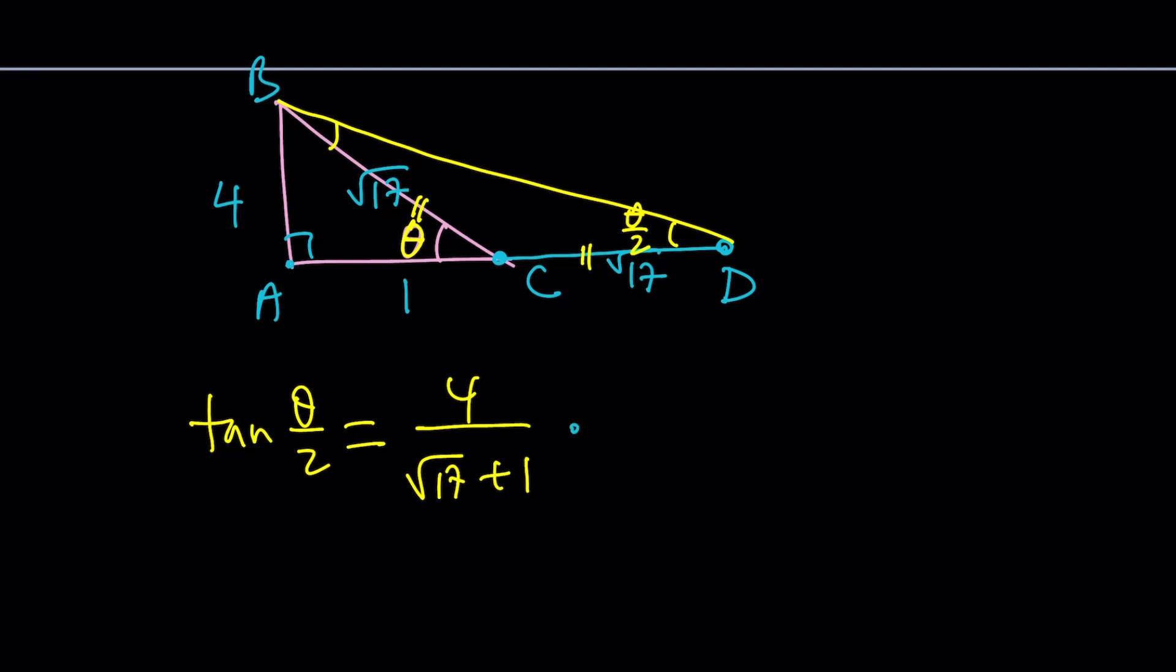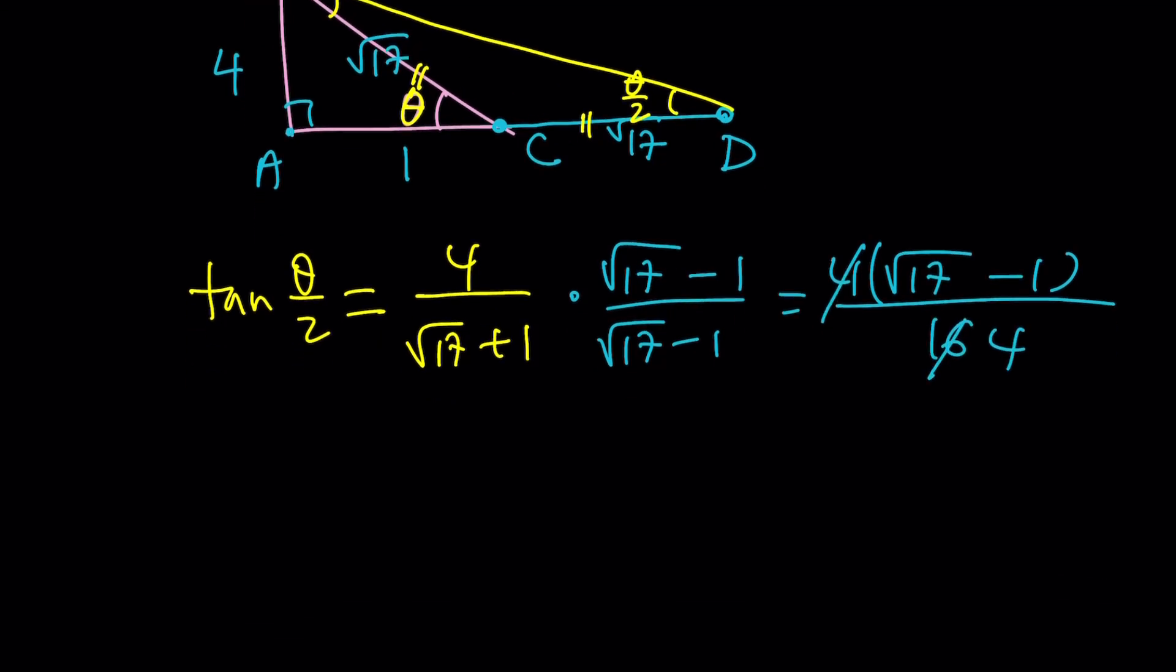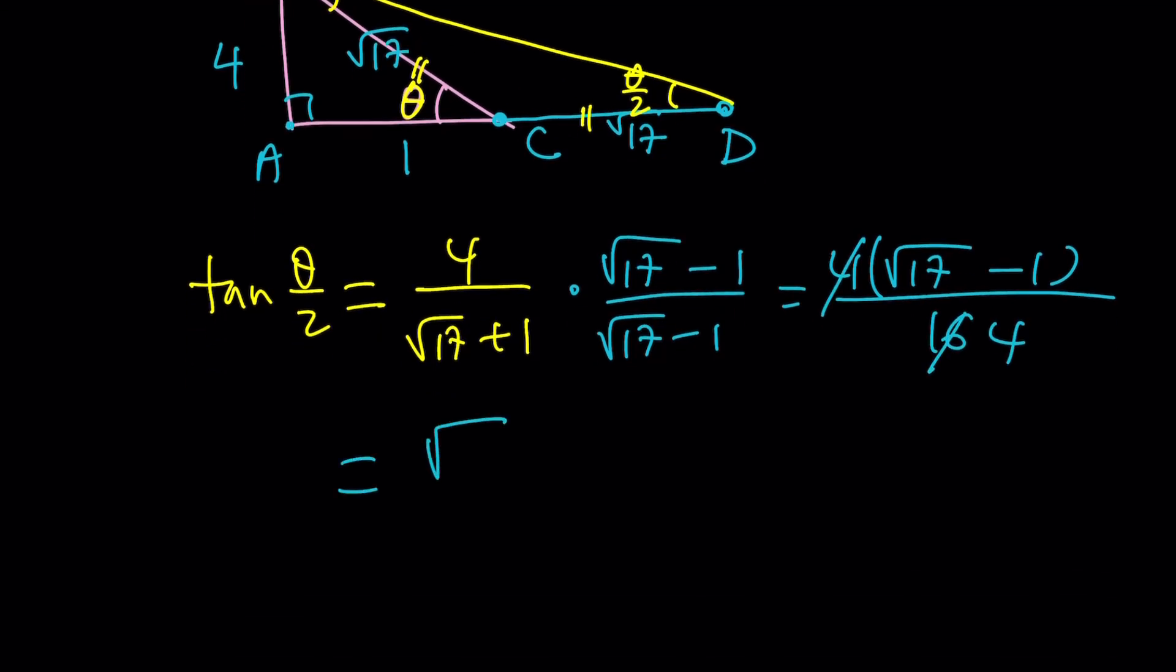That is 4 over square root of 17 plus 1. Let's go ahead and rationalize this. Multiply by conjugate. And you get 4 times the square root of 17 minus 1 divided by 17 minus 1 is 16 divided by 4. And you're going to get something like this.